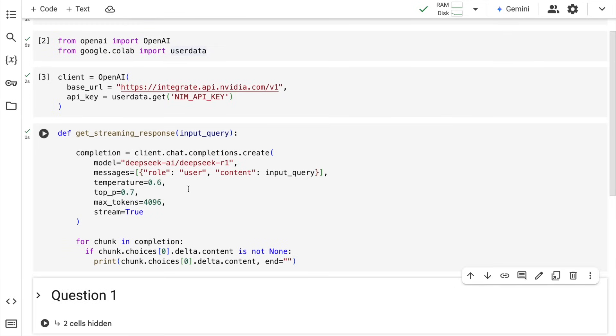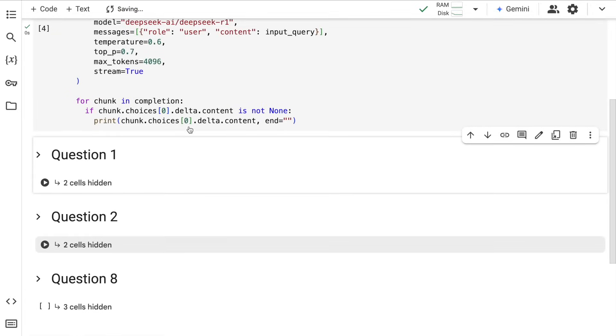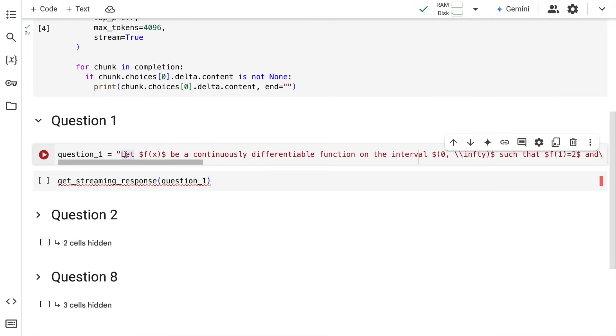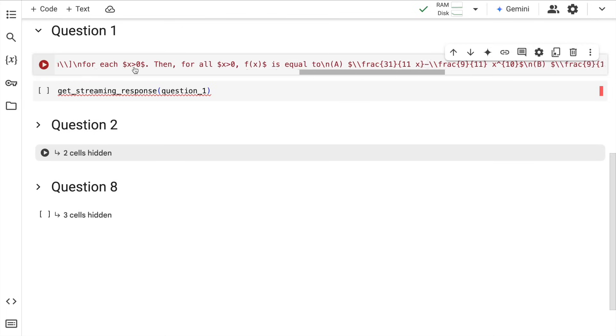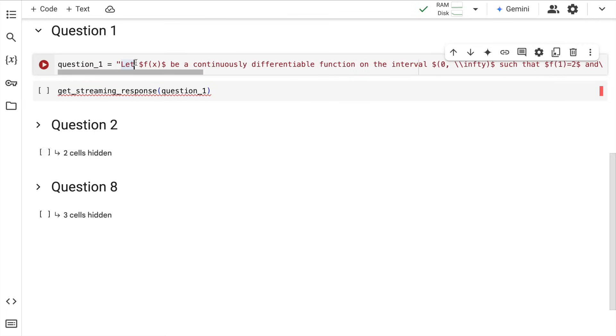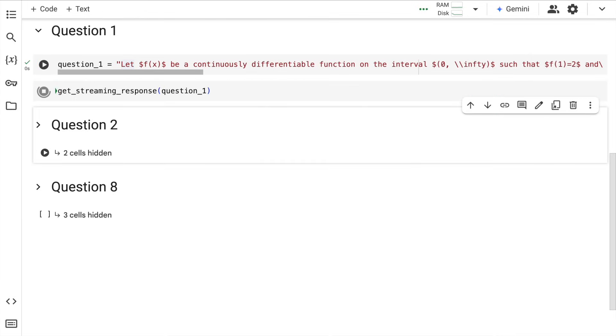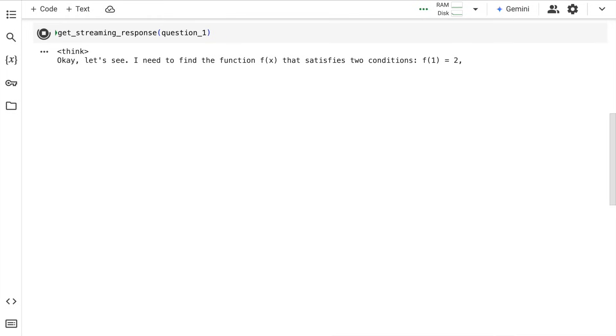Let's now refer back to the question that I showed you. For this particular question, given that there is a lot of mathematical terms involved, I have used a LaTeX version of this particular question and saved it into a variable called question_1. Now everything is ready. I will call the function get_streaming_response and pass in the first question. Here is where our DeepSeek R1 model, which is the entire 671 billion parameter model—not the quantized version, not the distilled version, the actual version in its full glory—is giving out this particular response.